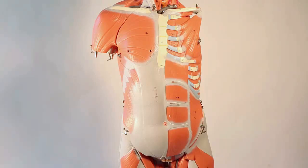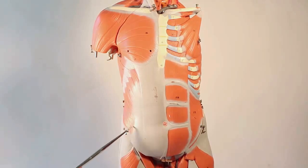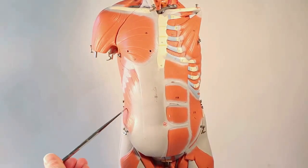So if we start at the most external layer, if we're looking out here, this layer right here is going to be showing the external oblique. Now notice the fiber direction, how they're going down. This is your external oblique muscle.